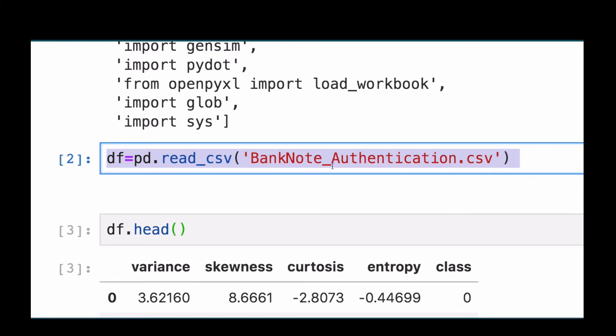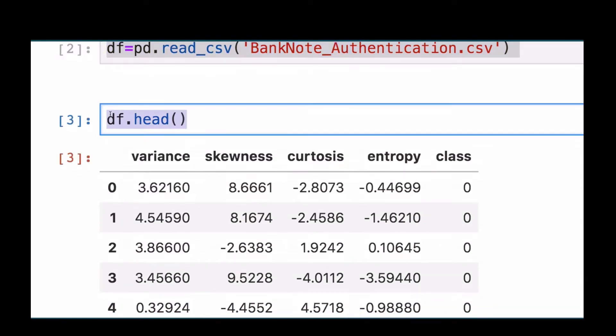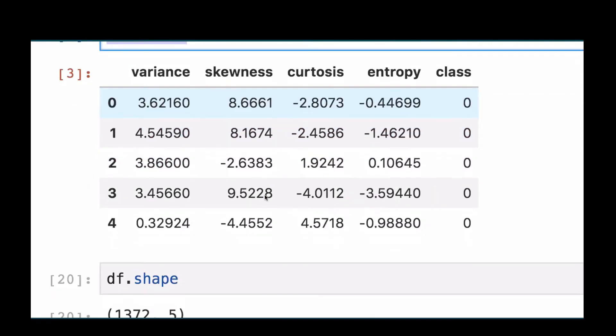As I said, this dataset is available on the UCI machine learning repository, and I encourage you to take a look at it. Then we will print the first five rows of the dataset to see what we are going to deal with.